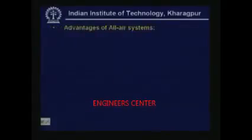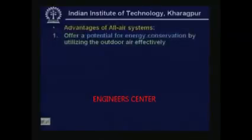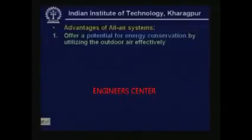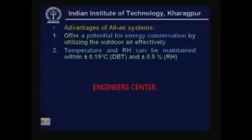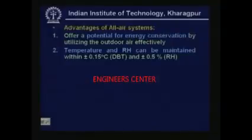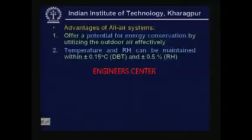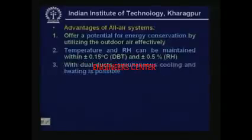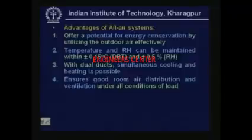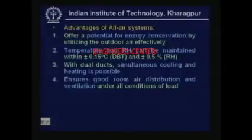Now let us look at advantages of all air systems. All air systems offer a potential for energy conservation by utilizing outdoor air effectively as just mentioned. Temperature and relative humidity can be maintained very precisely — temperature within plus or minus 0.15 degrees centigrade and relative humidity within plus or minus 0.5 percent — very close control. And with dual ducts, simultaneous cooling and heating is possible. All air systems also ensure good room air distribution and ventilation under all conditions of load.